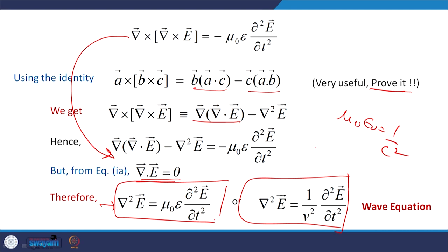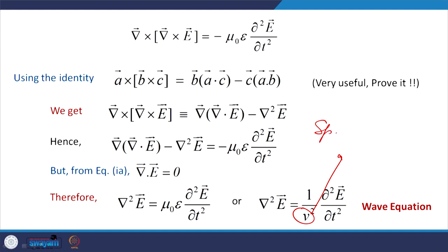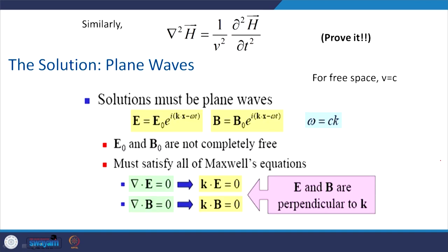This relation is called the wave equation. Similarly, for the magnetic field you end up with the same form — I leave that for homework. You take the curl of the fourth equation, substitute for the second one, and find the result. If you want a solution, you will have plane wave solutions like E equals E_0 e^(i(kx − ωt)) or B equals a similar expression.